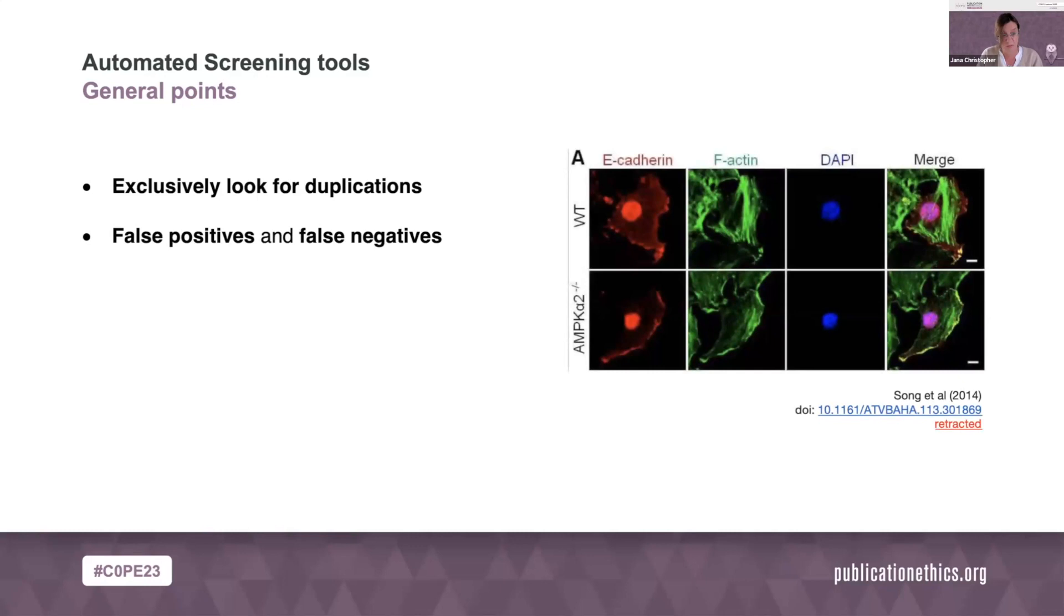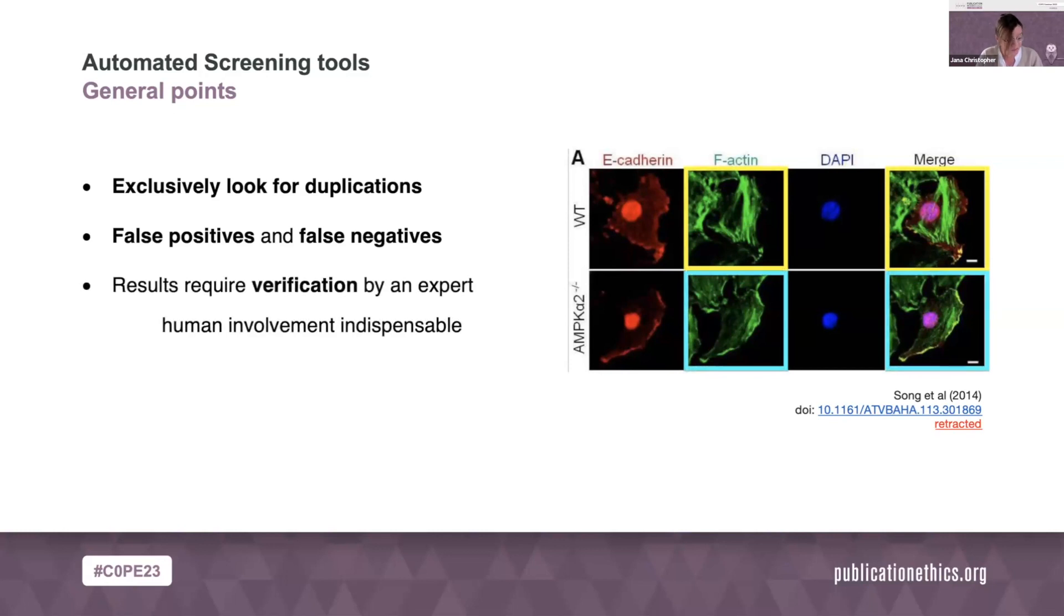The results from all these tools will include a considerable amount of false positives, that is duplications that are actually correct and should be there. And of course, also false negatives, that is duplications that aren't detected, and also instances where images should be the same but aren't. This is just an image to clarify what I mean by should be the same but aren't. In the merged image on the far right, you should see that the same image as in the images on the left. And if that isn't the case, then that should be a flag. The results will always need to be checked and verified and interpreted by an expert. So human involvement remains vital and indispensable when you're using automated screening tools. And then lastly, these tools don't come for free. And smaller journals with limited financial means might struggle or have to compromise on how extensively they can use them.